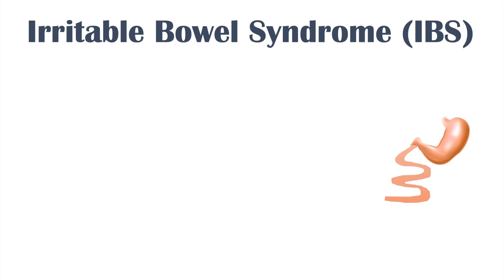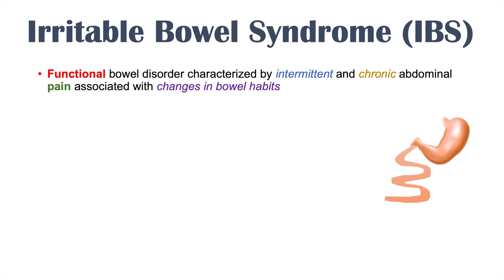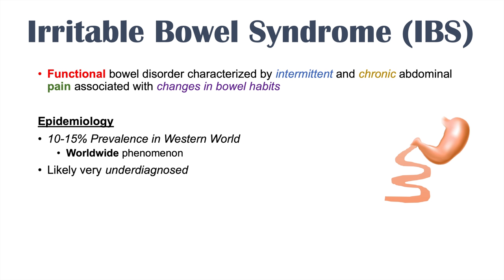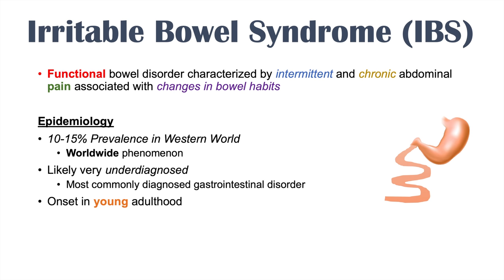IBS is a functional bowel disorder characterized by intermittent and chronic abdominal pain associated with changes in bowel habits. Approximately 10-15% of people in the Western world are estimated to be affected by IBS, but it is a worldwide phenomenon and appears to be increasing in prevalence. It's likely very underdiagnosed, yet it's still the most commonly diagnosed gastrointestinal disorder. IBS generally has an onset in young adulthood.